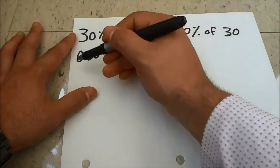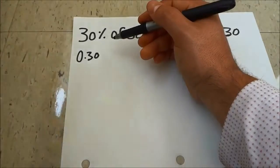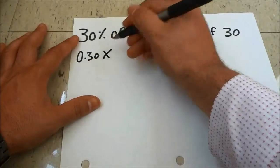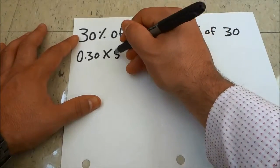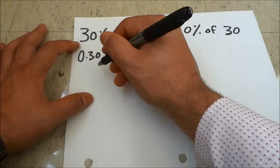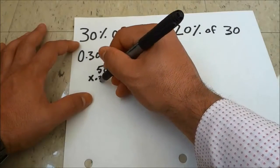0.30 is probably the easiest way to write it down. This way you remember that it's 30%. You're going to multiply that decimal by the second number, so 0.30 times 50. Now I'm just going to go ahead and multiply those two numbers, so 50 times 0.30.